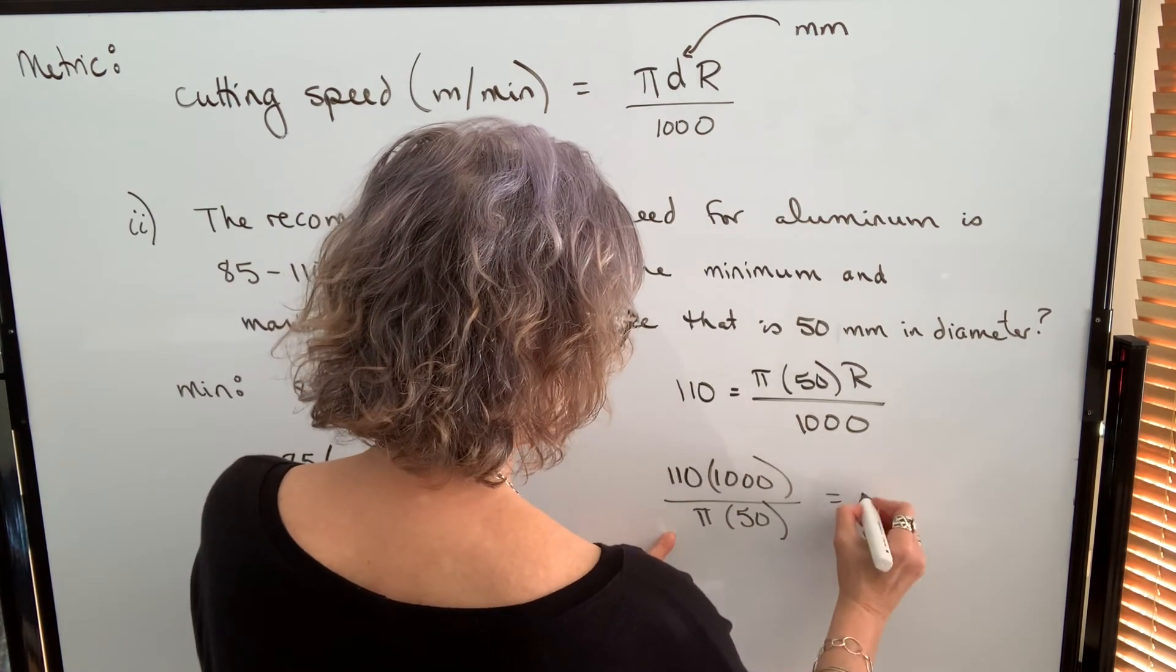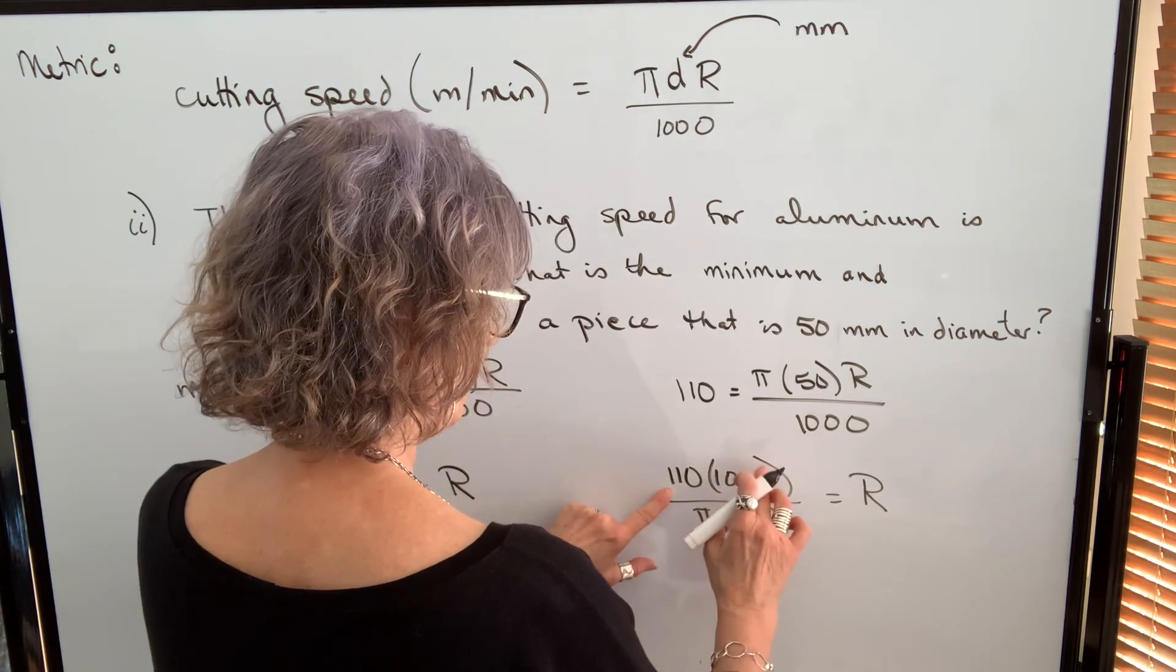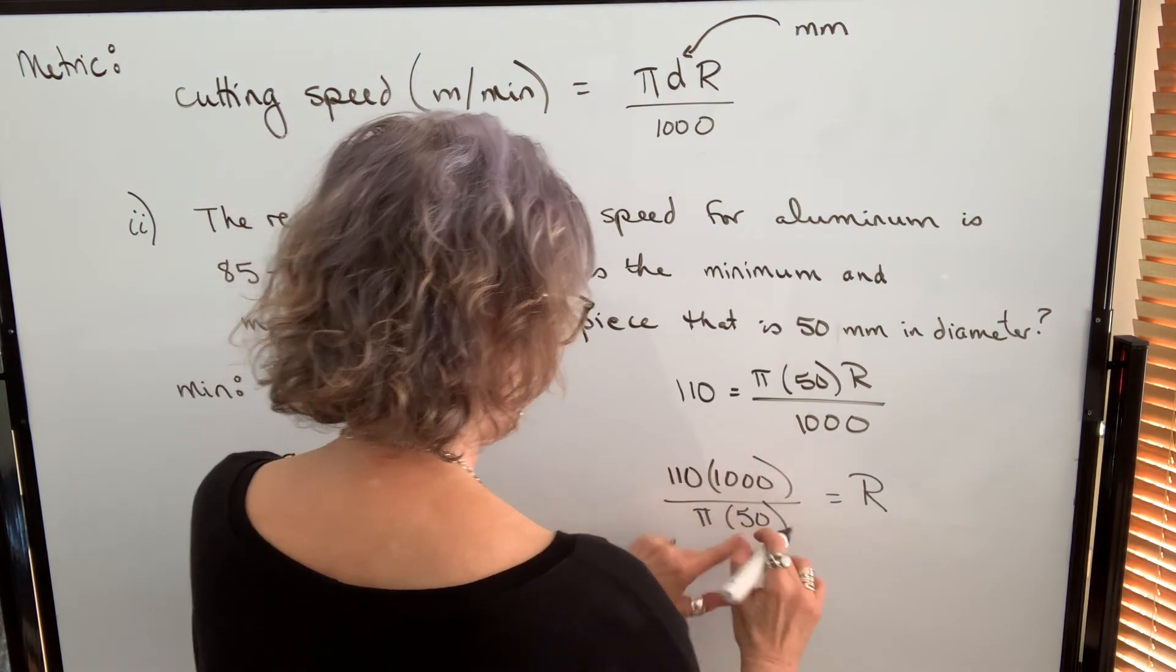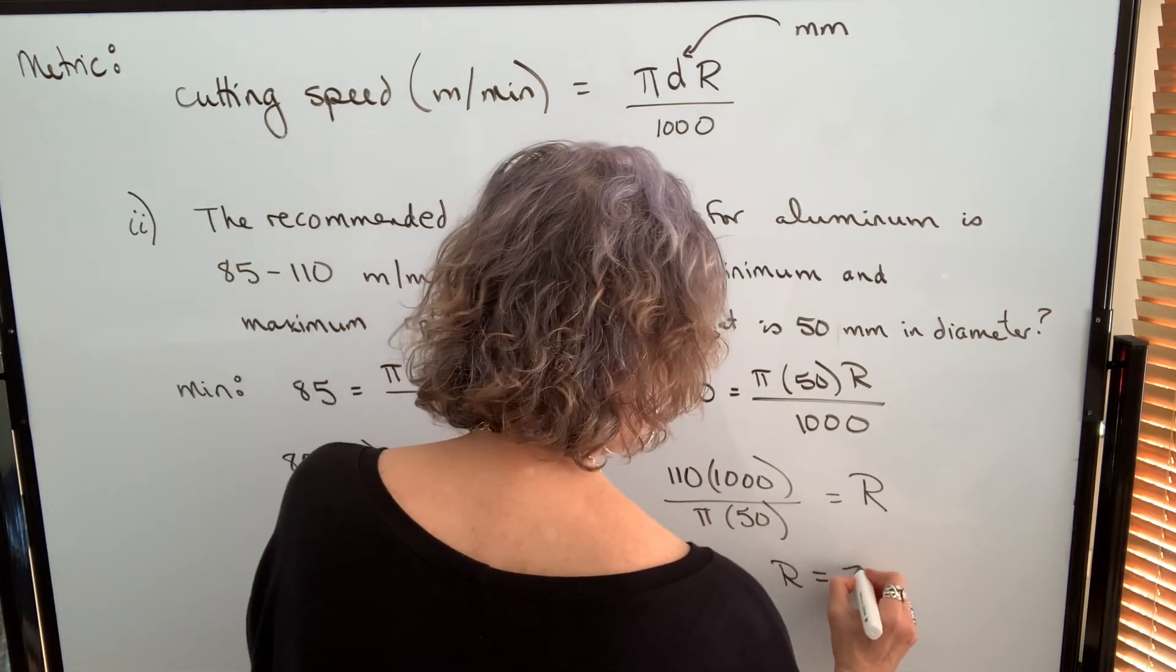When I do it on the right side, everything cancels except the r. Then when I multiply 110 by 1,000, divide by π, divide by 50, r is equal to 700.